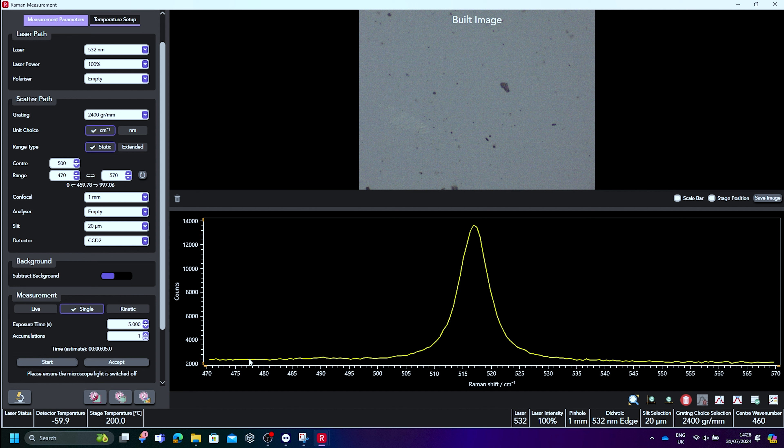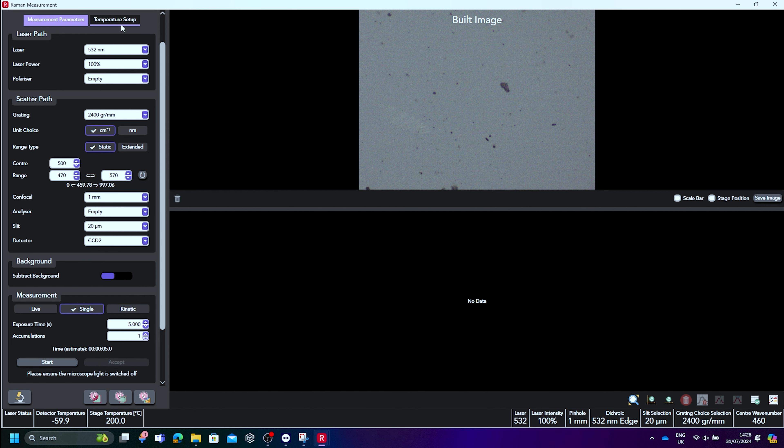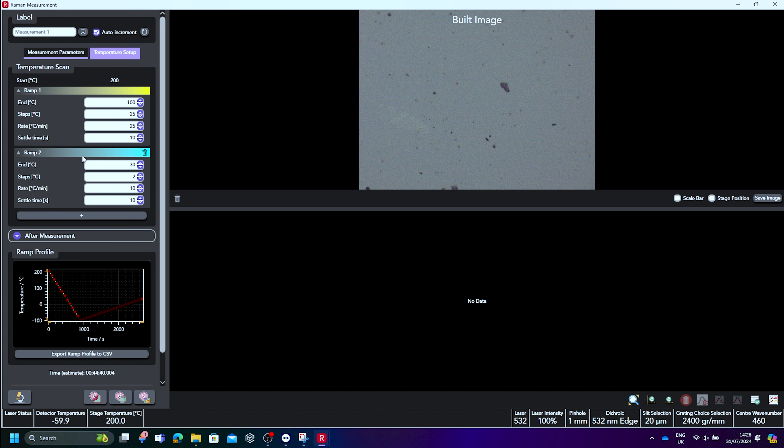In the temperature setup tab, we can set the end temperature, the number of steps between the beginning and end points, the rate at which the temperature changes, and the settled time between reaching the temperature required and performing the Raman measurement. This temperature scan is set to run from 200 to minus 100 degrees Celsius, and record a Raman spectrum every 25 degrees Celsius after a settled time of 10 seconds.